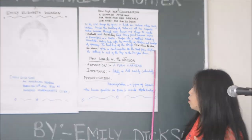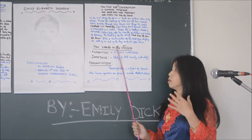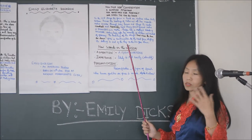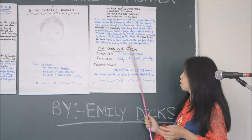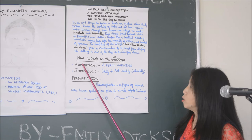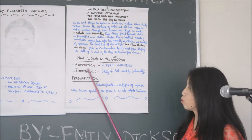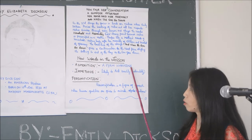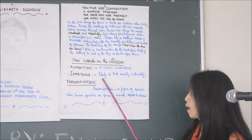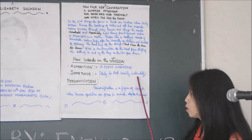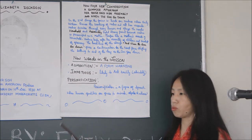The setting shifts to the end of the day as the sun goes down, symbolizing the end of the day. New vocabulary from today's lesson: 'admonition' means a strong warning; 'impatience' means likely to act rashly or abruptly. We have already learned personification as a figure of speech.